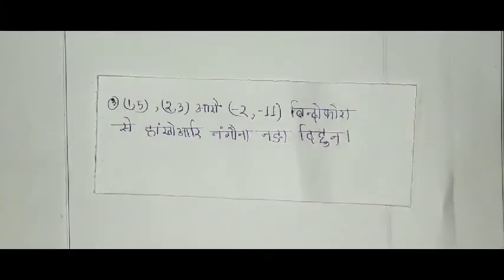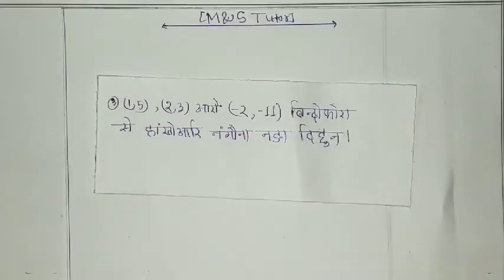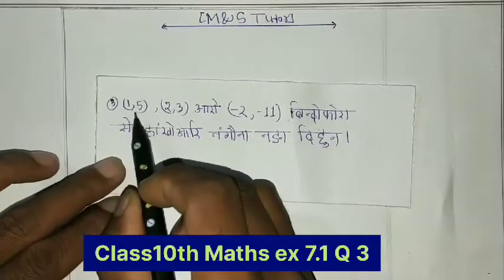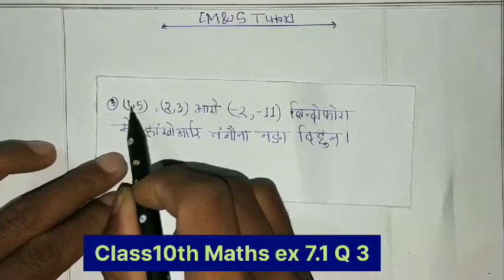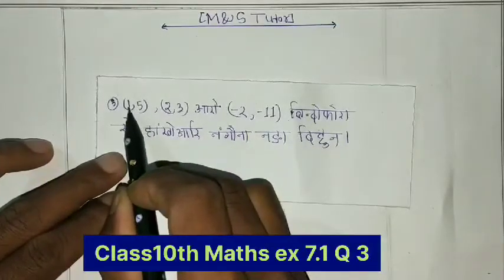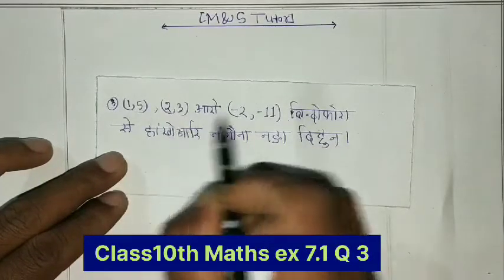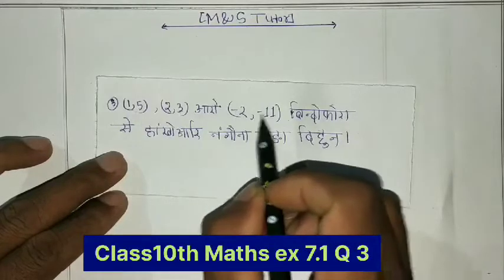This is Class 10 Mathematics, Exercise 7.1, Question number 3. The coordinates given are: 1, 5 and 2, 3 and minus 2, minus 11.